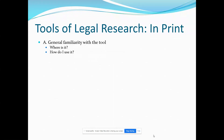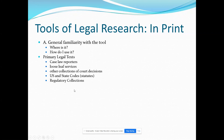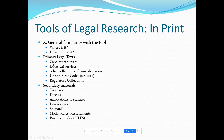Once we have our legal issue and figure out the source, we go to our tools of legal research. We're going to talk about tools of legal research in print books. We have two kinds of legal texts. We have ones with primary law — actual laws — including case law reporters, loose-leaf services, other collections of court decisions, our codes and statutes such as the United States Code or individual state codes, and collections of regulations.